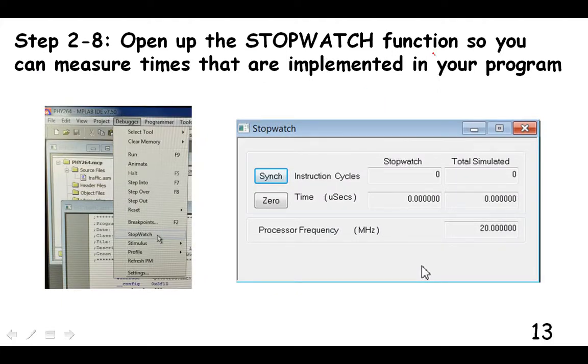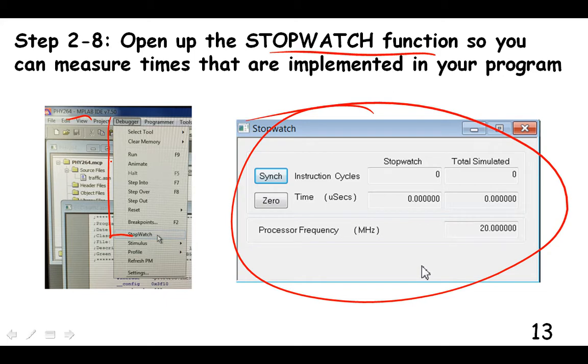Okay. Let's open up the stopwatch function within the MPLAB program. Go to the debugger and select stopwatch, and it'll look like this. And this is just to allow you to time how long the different steps of your program take to run. And right now it's default setting is for a processor whose frequency is 20 megahertz. However, our microcontroller is set at four megahertz.